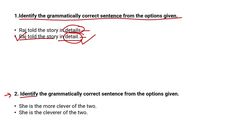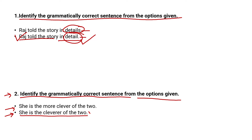The second question asks us to identify the grammatically correct sentence: 'She is the more clever of the two' or 'She is the cleverest of the two.' The correct option here would be 'She is the more clever of the two' — though this option also raises a point.